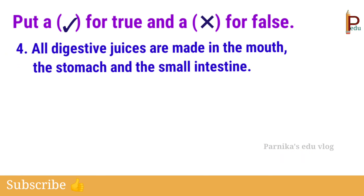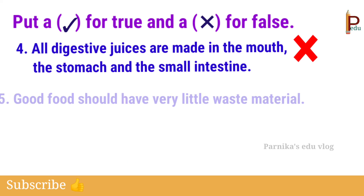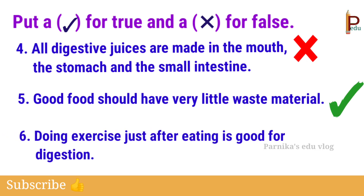Fourth one: all digestive juices are made in the mouth, the stomach, and the small intestine — it is a false statement, because digestive juices are made by the small intestine, liver, and pancreas. Fifth one: good food should have very little waste material — yes, it is true. Sixth one: doing exercise just after eating is good for digestion — it is a false statement.